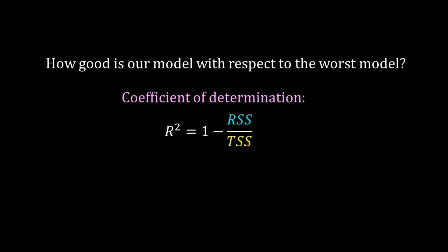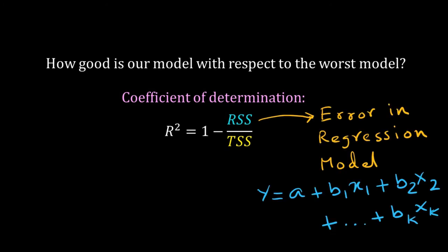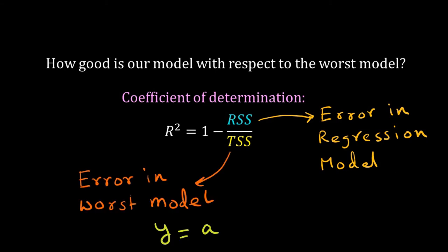It is equal to 1 minus RSS by TSS. RSS is the error in our regression model and TSS is the error in the worse model. In the worse model, we consider y is independent of all the predictors. So y is equal to constant. But we have a problem when we use this for multiple regression.